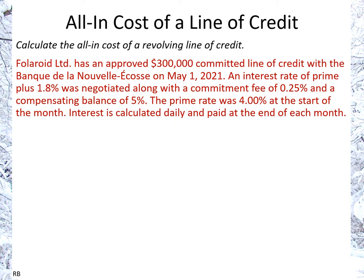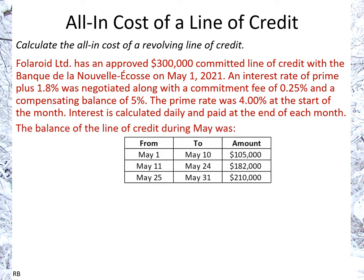Interest is calculated daily and paid at the end of each month. The balance on the line of credit during May was: from the 1st to the 10th, $105,000; from the 11th to the 24th, $182,000; and from the 25th to the end of the month, $210,000.